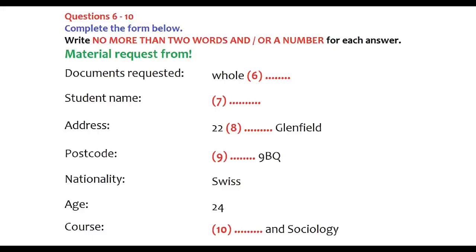And finally, which course are you enrolled on? Right. Well, that's a bit complicated, since I'm hoping to switch to economics and history. But at the moment I'm down to do economics and sociology. It's a joint degree. OK. I'll put that. Great. Well, I'll pop the information pack in the post, and you should get it soon. That is the end of part one. You now have half a minute to check your answers.